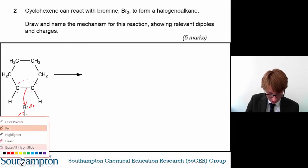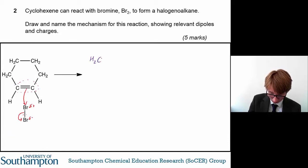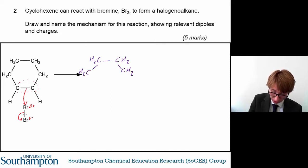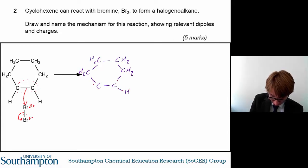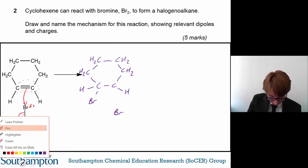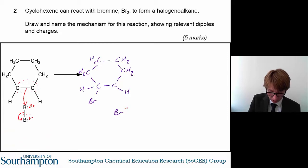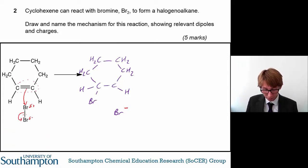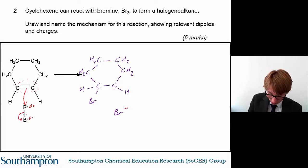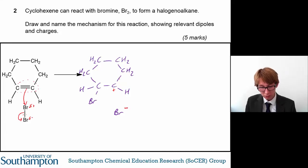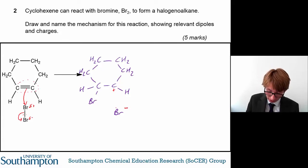Drawing the intermediates for this reaction — you've got an H there, an H there, a Br there, and a Br down there. This Br has a negative charge because the pair of electrons in the bromine-bromine bond was pushed onto it, making it a bromide ion. You've also formed a carbon cation because the carbon only has three bonds, and the electron pair from the double bond has formed a new bond with the other bromine atom.